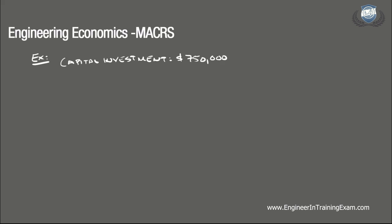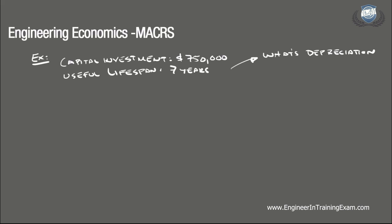So let's run through an example. Assuming modified ACRS, for a certain capital investment of $750,000 made for a specialized equipment with a useful life of 7 years, what is the depreciation write-off in year 5?